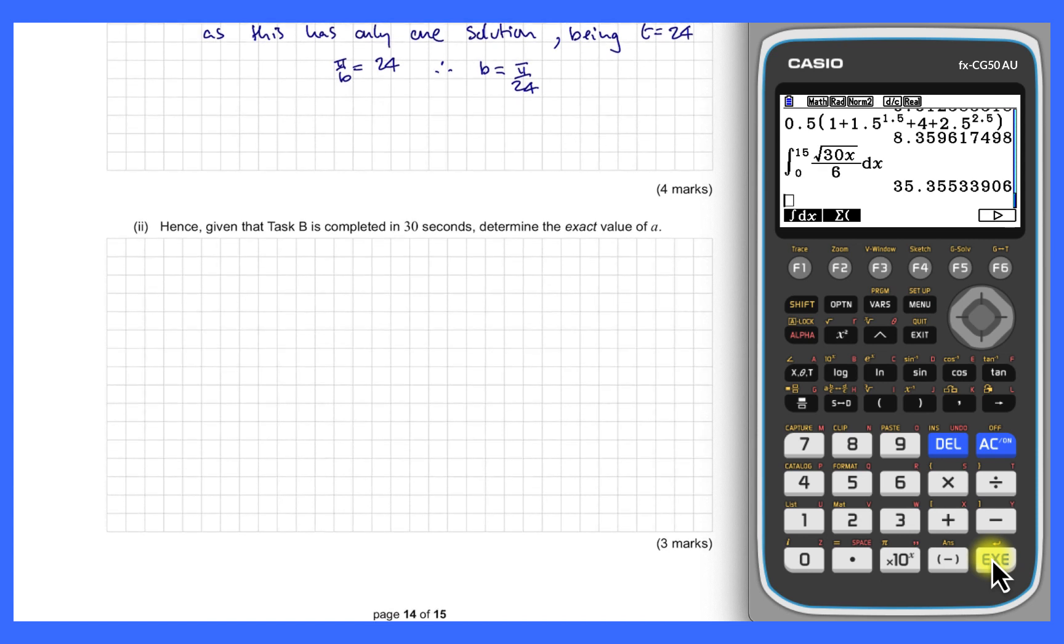So now we have an exact b value. We now need an exact a value, and the extra information we're given is that task b is completed in 30 seconds. So we're going to use the integral from 0 to 30 and the b value. That definite integral will be equal to 100, because it's the 100 being the completion of the task bar. The integral of a cosine function will be a sine function, so it's going to be a sine pi on 24t multiplied by 24 on pi plus a of t, and that's from 0 to 30.